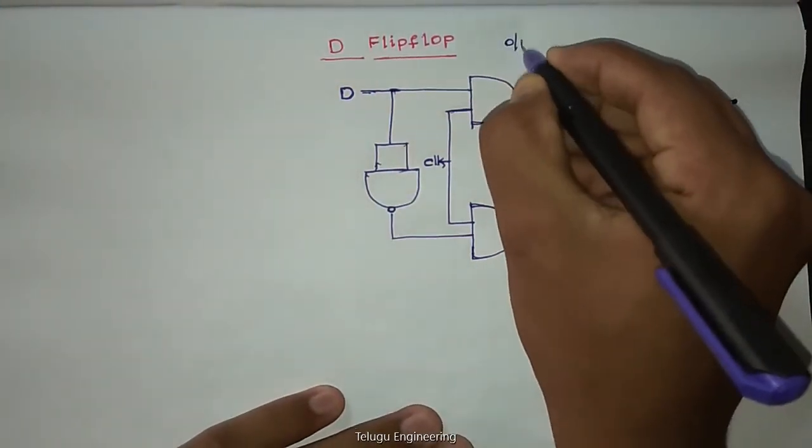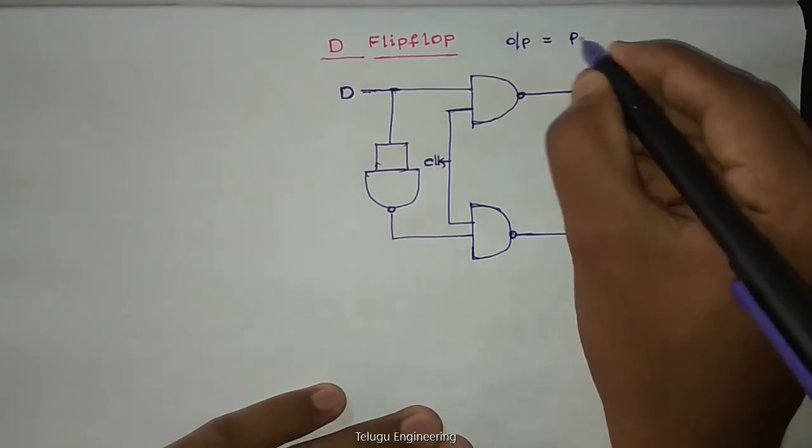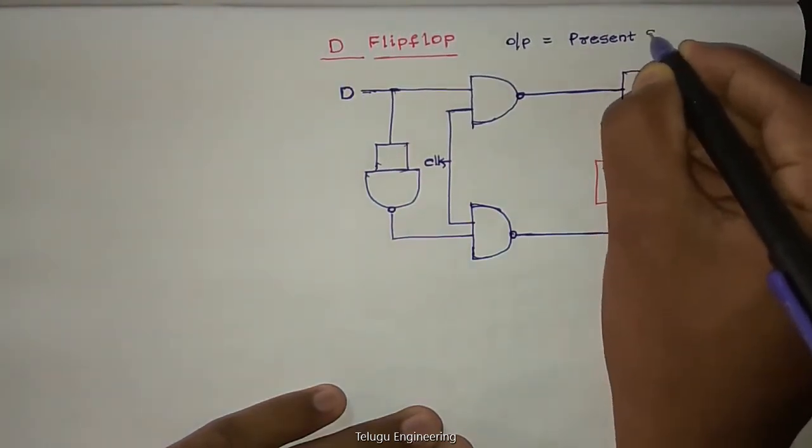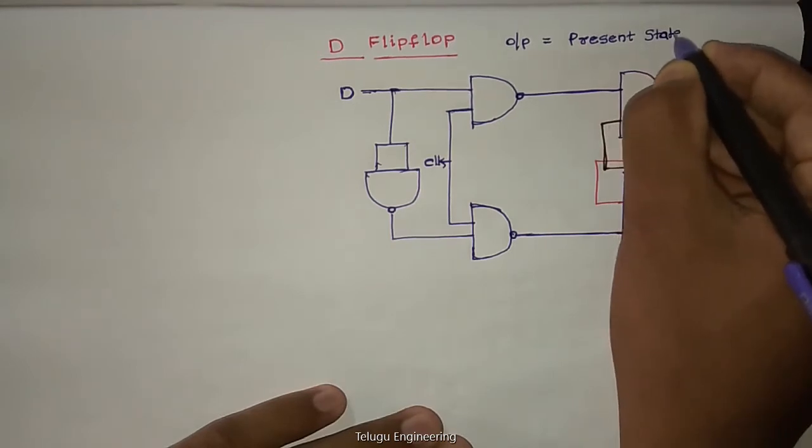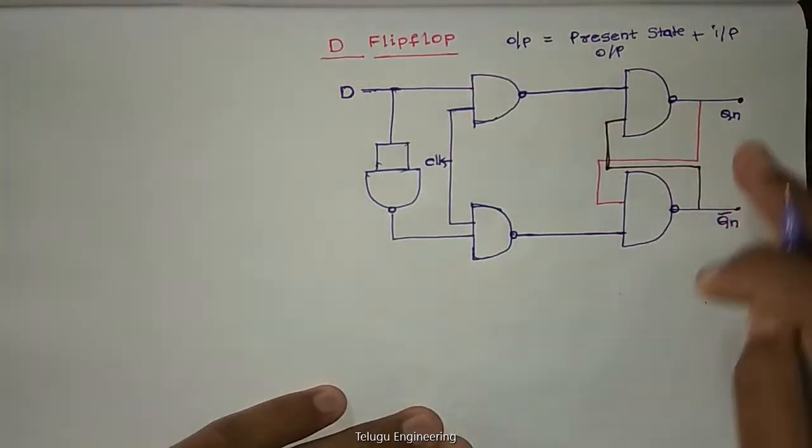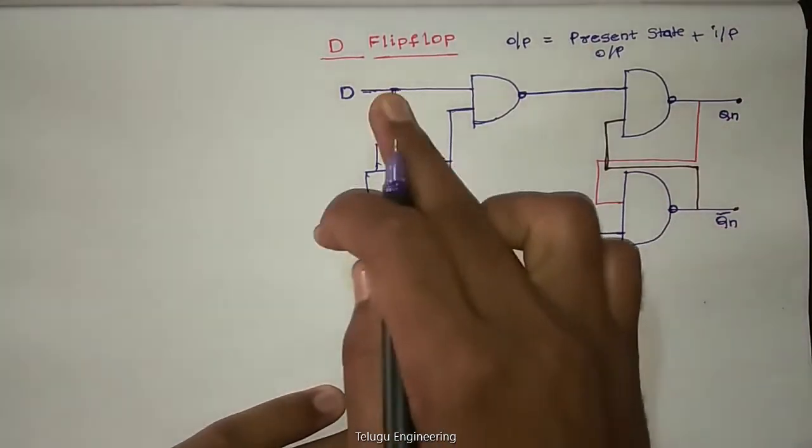This is a sequential circuit which means output depends upon present state. Present state output plus inputs. So the output, present state plus we apply inputs.